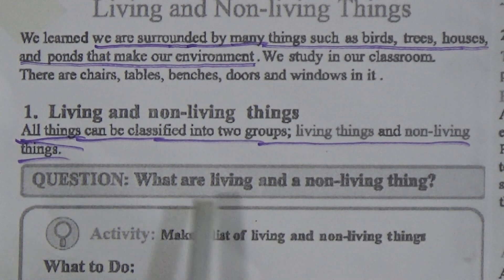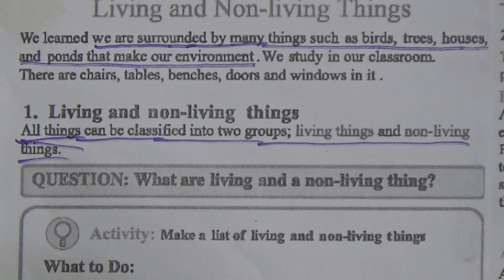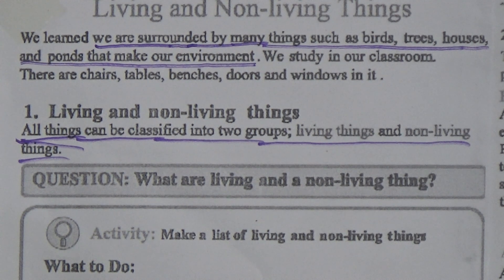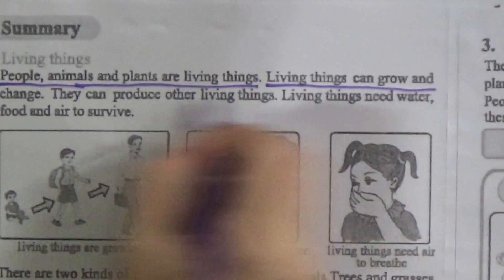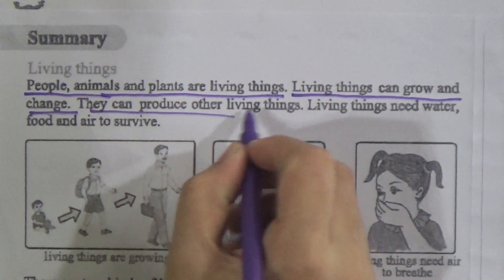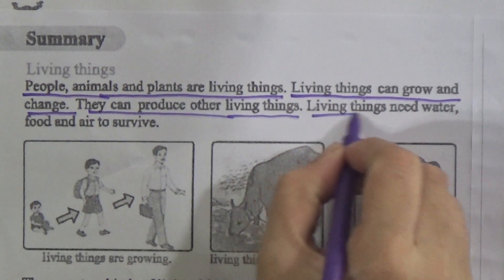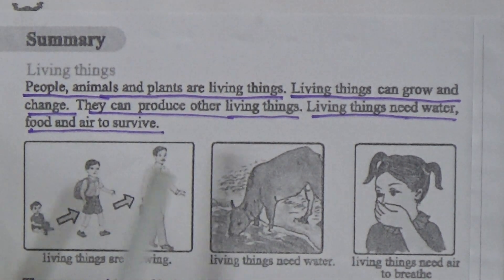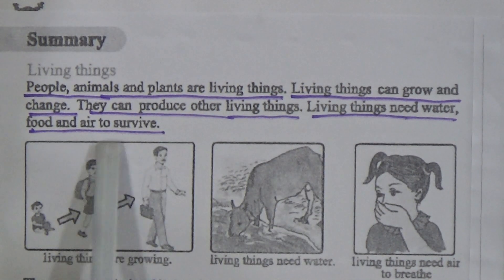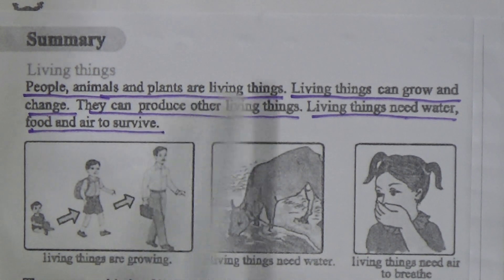Now we'll discuss about living things. People, animals and plants are living things. Living things can grow and change, and they can produce other living things. Living things need water, food and air to survive. Underline this line and memorize it properly - it is also a question and fill in the blanks.